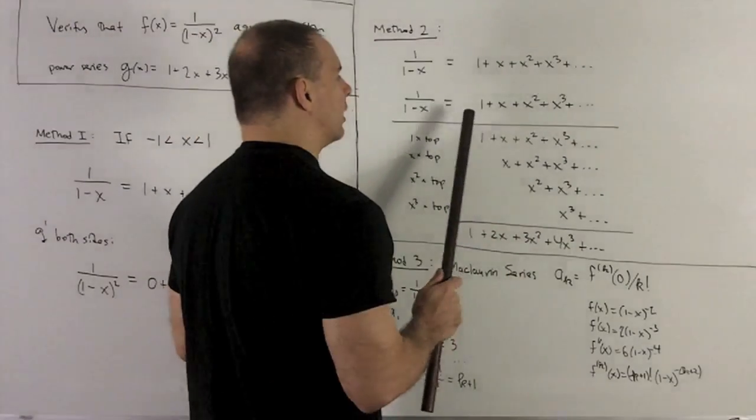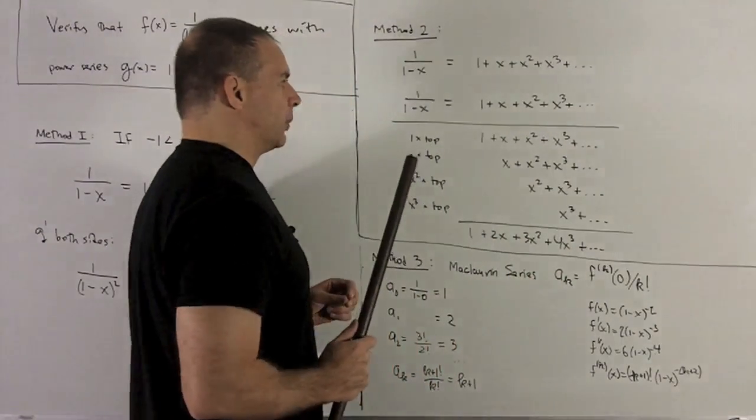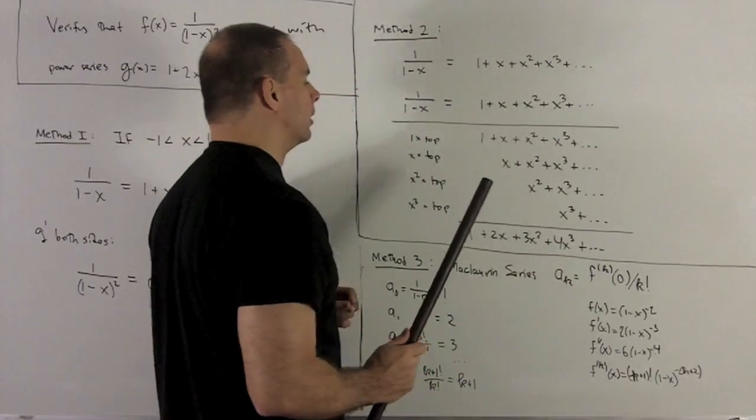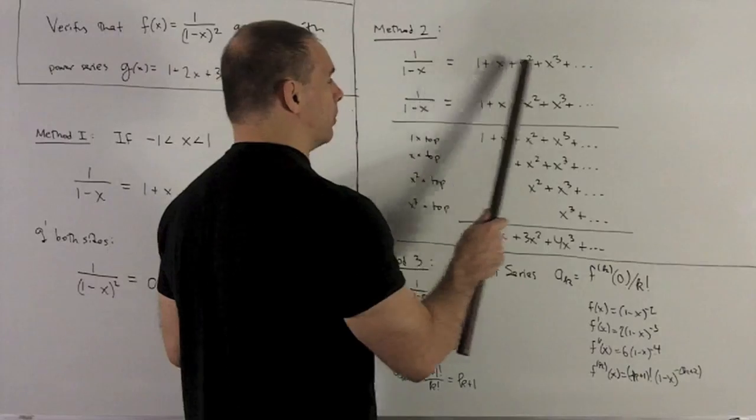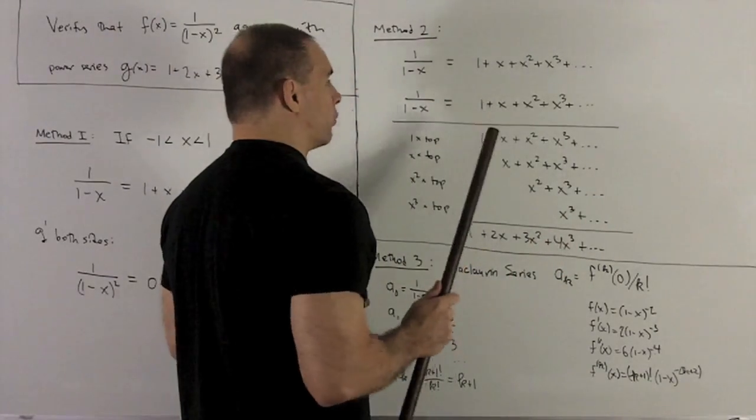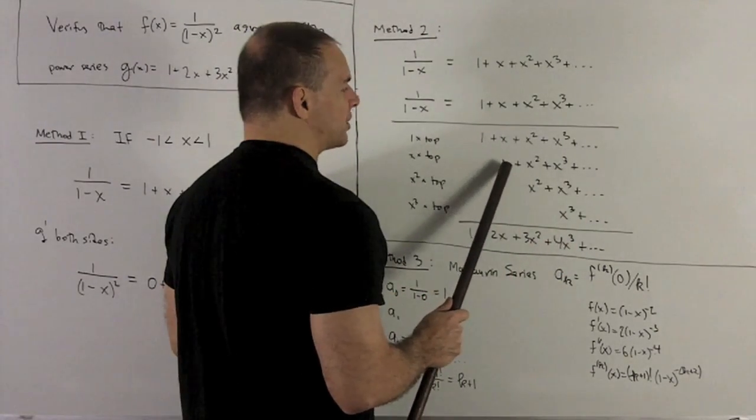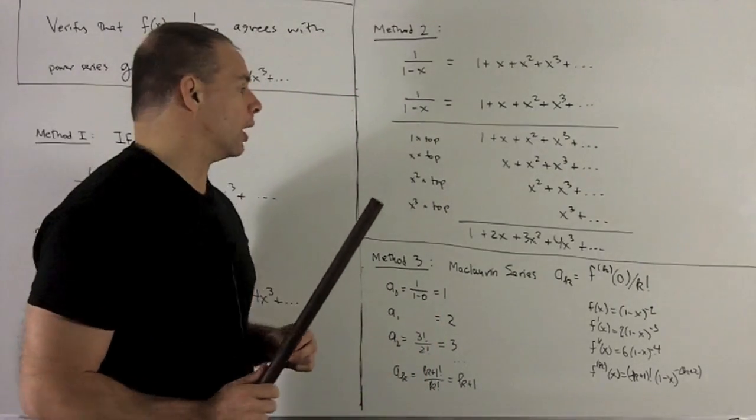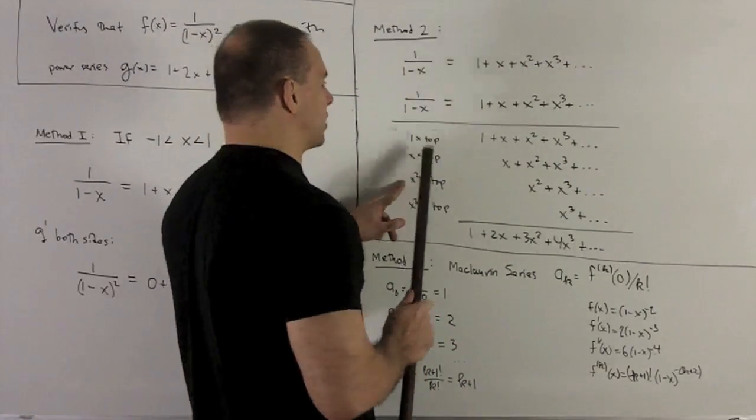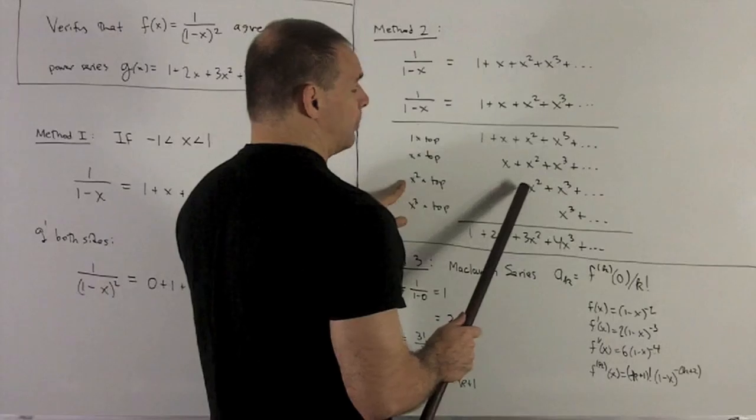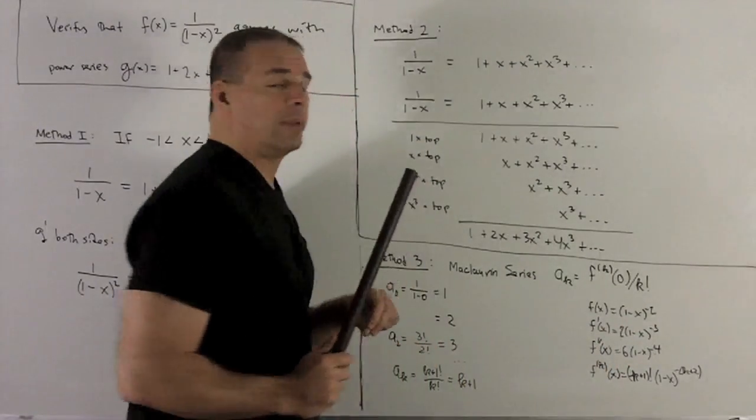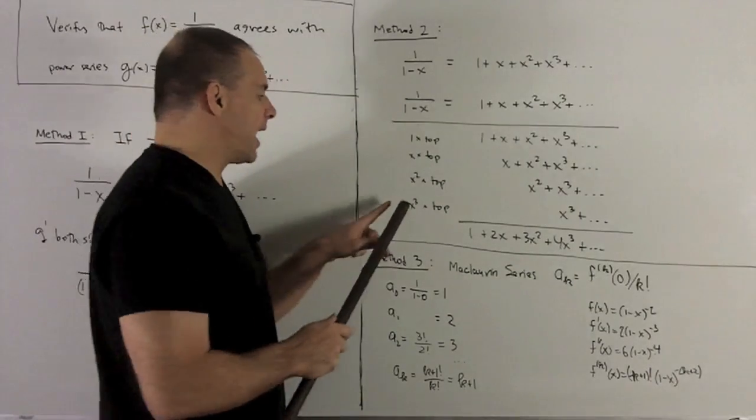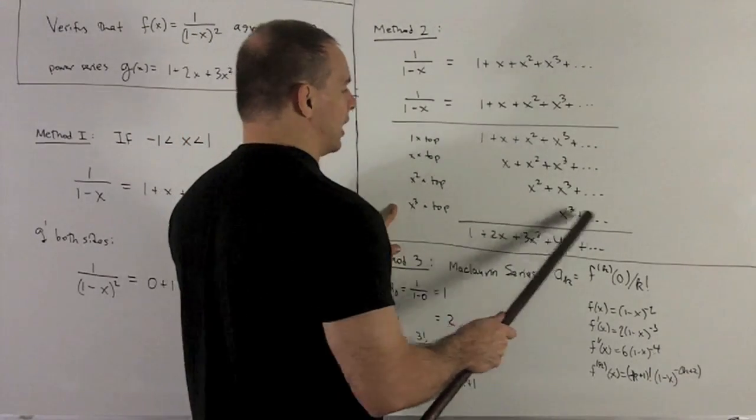So we just expand. If I take this 1, multiply it by the top, it's just rewriting that out again. I take this x, multiply it by the top, we start with an x, and then every other term goes up exponent by 1. I multiply by x², we leave with an x², and then we just move down, increasing each exponent by 1. And then finally, we'll do the x³, same idea.